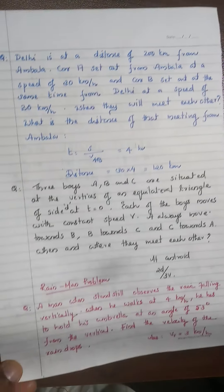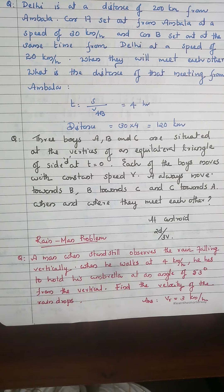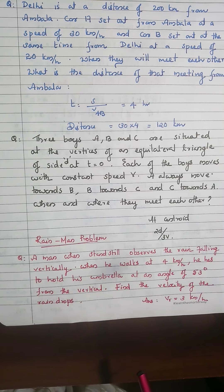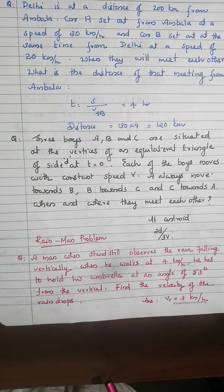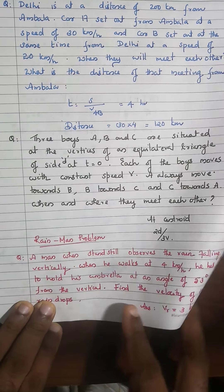The Rain-Man Problem: you must revise this concept carefully. A sample question: a man standing still observes rain falling vertically. When he walks at 4 km/h, he has to hold his umbrella at 53 degrees from the vertical. Find the velocity of the rain drops. Draw the figure, apply the relative velocity concept, and solve.